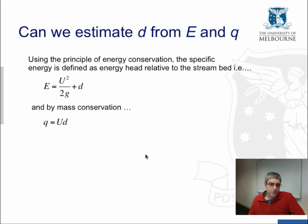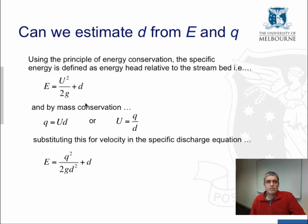And we know by mass conservation that the discharge per unit width is the product of velocity and flow depth, q = Ud. We can rewrite that as velocity equals q/d. If we substitute this for velocity in the first equation, then we get E = q²/(2gd²) + d. So we have three variables in this equation if we consider gravitational acceleration is more or less a constant. And it would seem that for a given known energy and known discharge, we should be able to calculate depth.